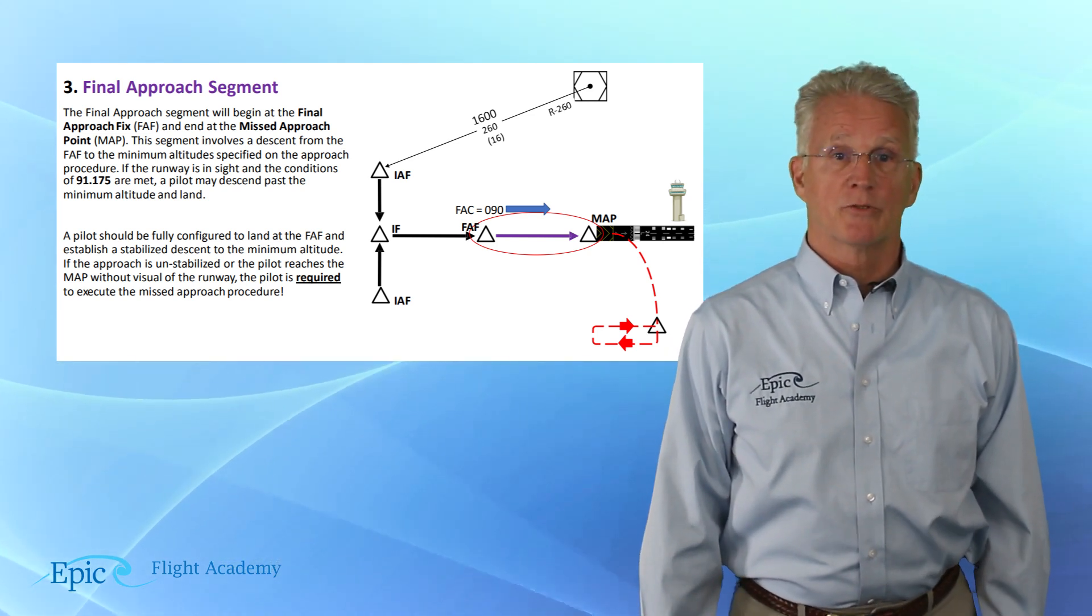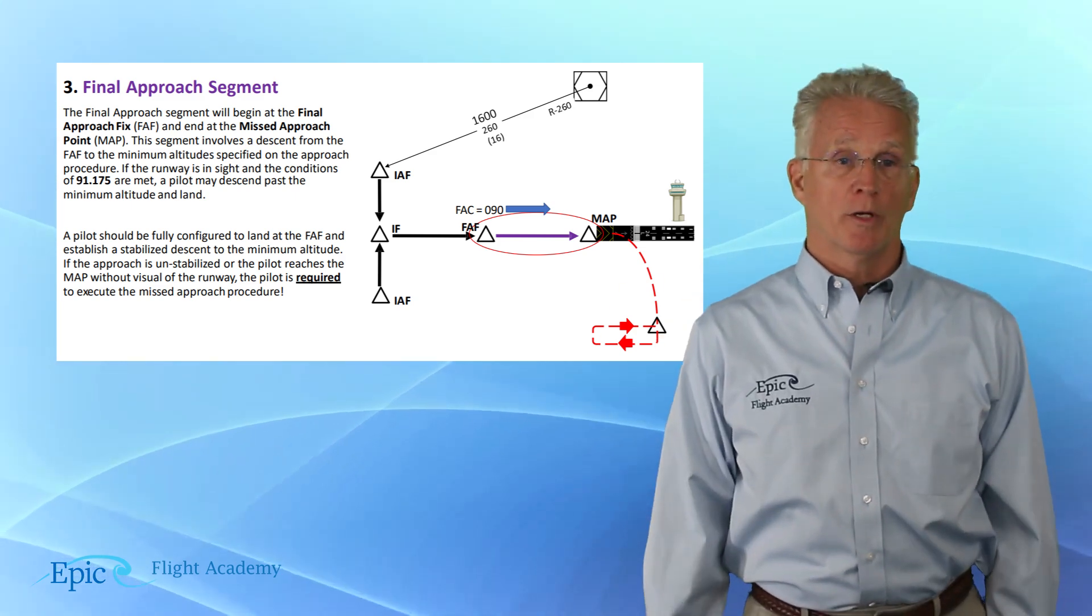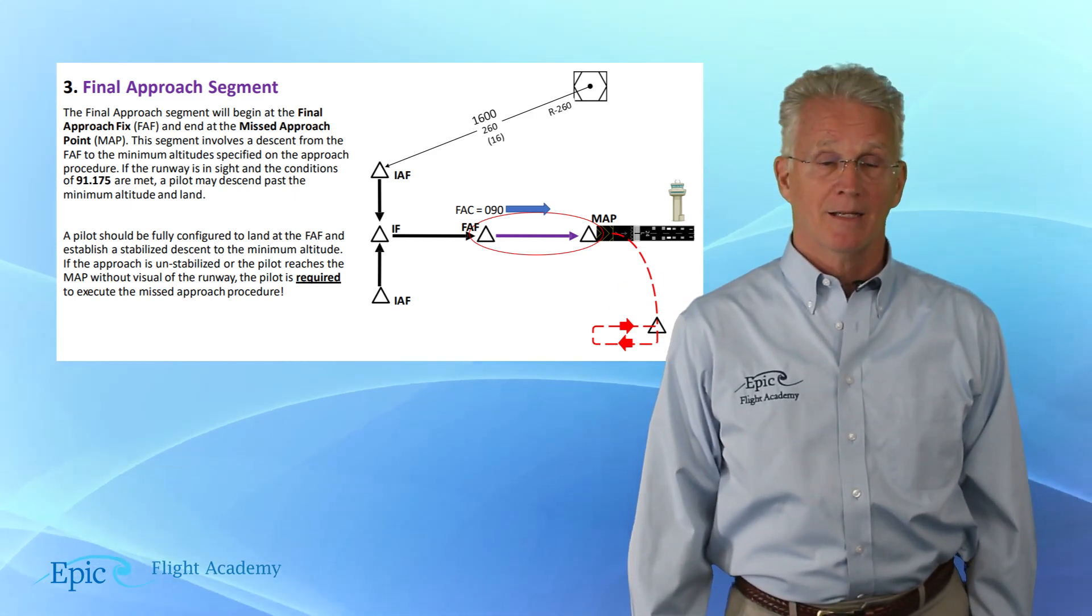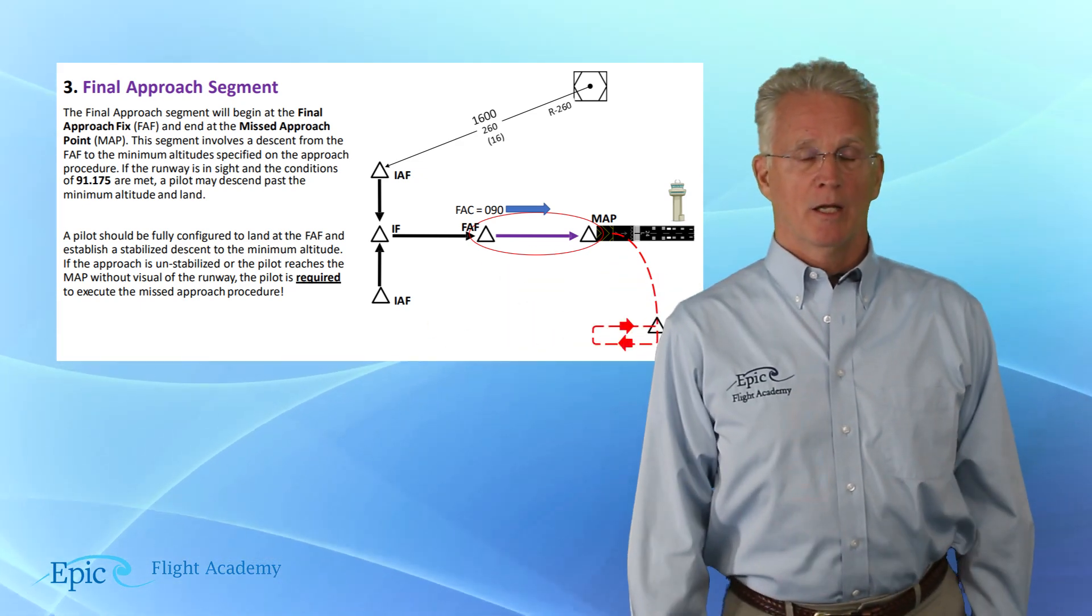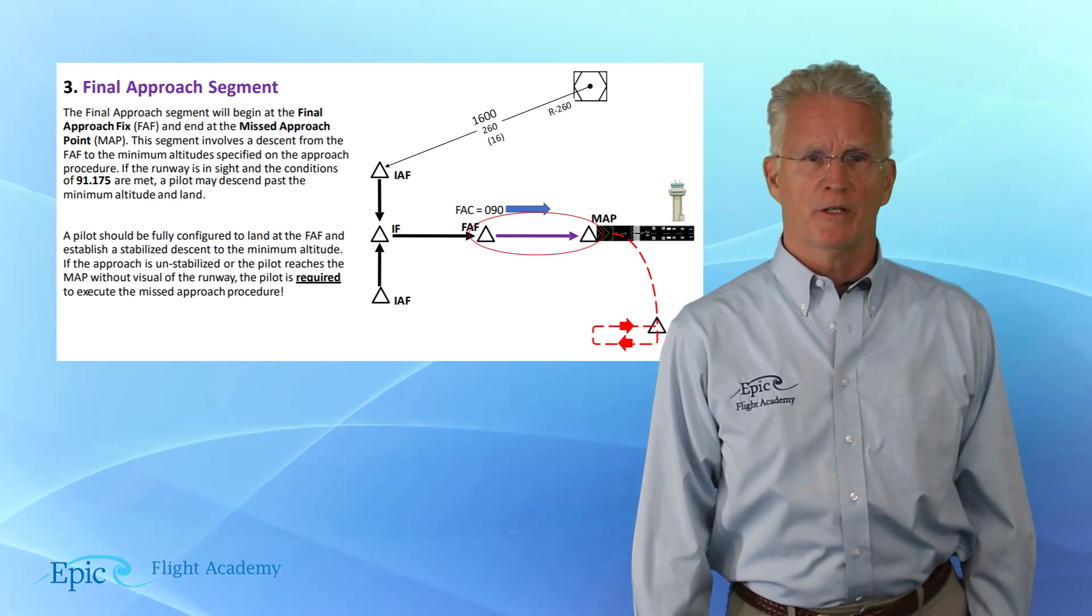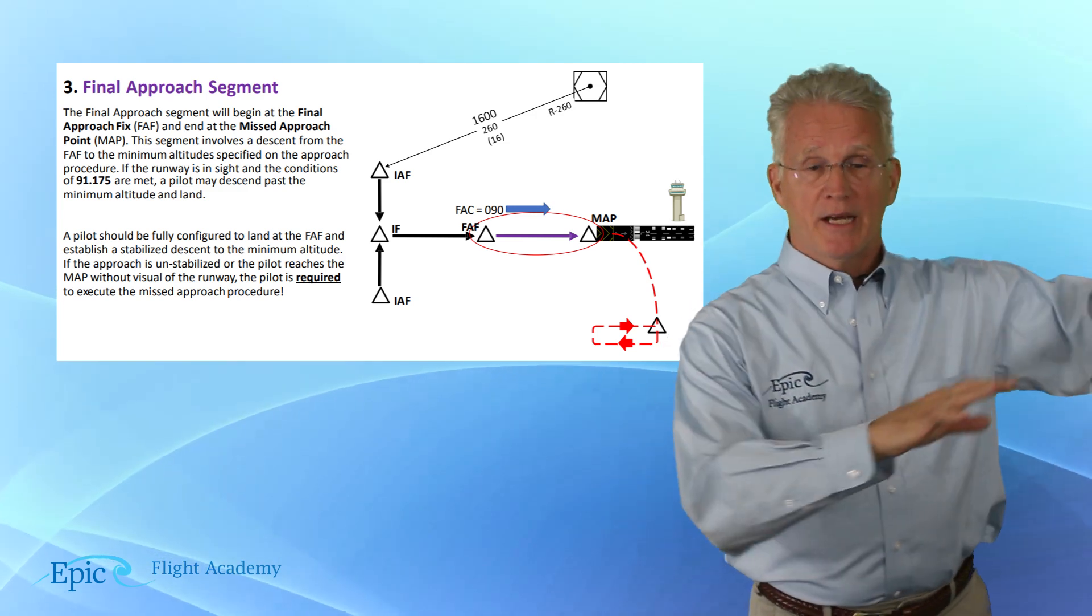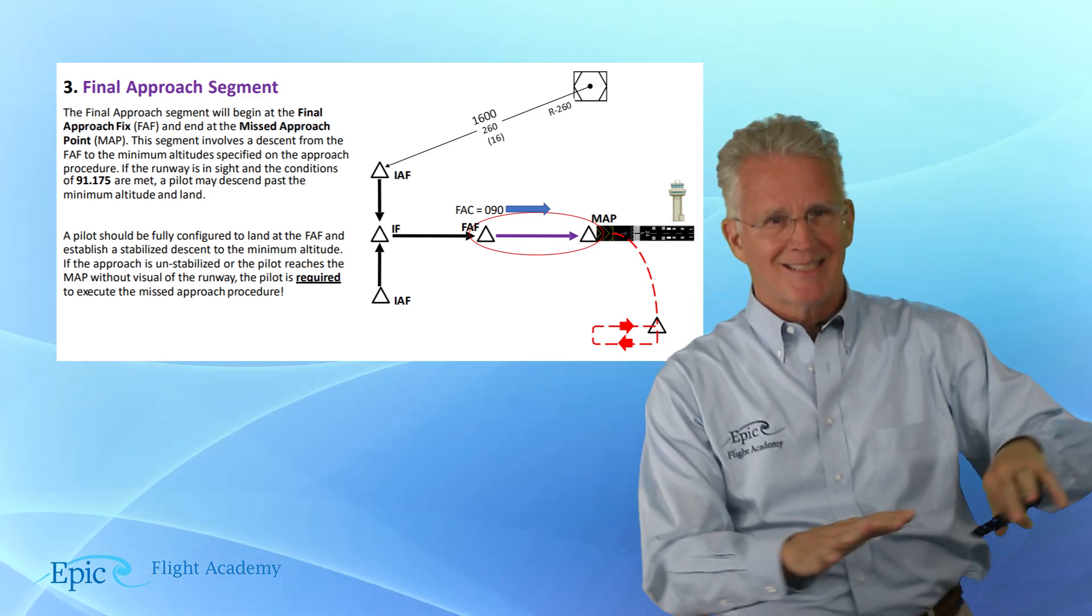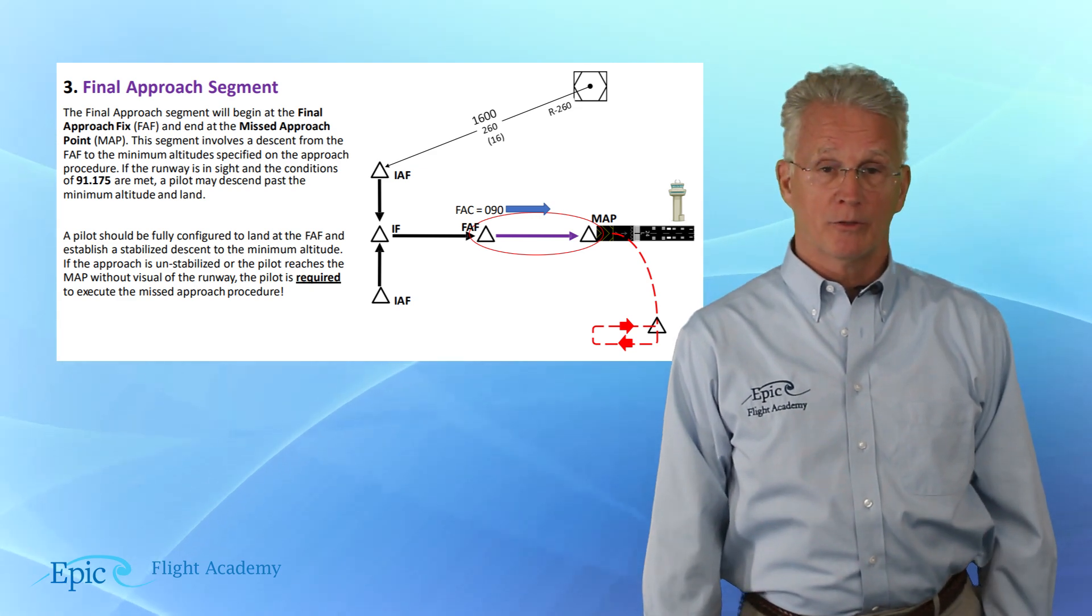If the runway is in sight and the conditions of 91-175 are met, a pilot may descend past the minimum altitude and land. A pilot should be fully configured to land at the final approach fix and establish a stabilized descent to the minimum altitude.